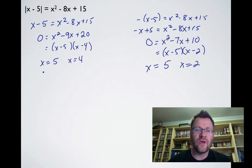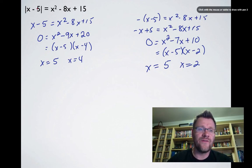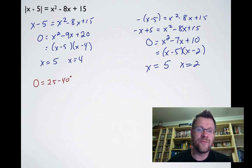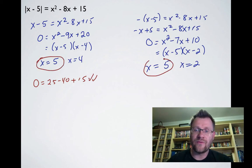Checking x = 5: left side is |0| = 0, right side is 25 - 40 + 15 = 0. It checks out. We had x = 5 in both equations, so that's a good answer.